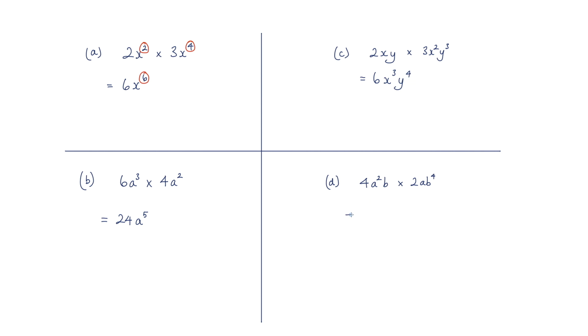For this last one d, we've got the 4 multiplied by 2, that's 8. a squared multiplied by a, a cubed. And the b multiplied by b to the power of 4 is b to the power of 5.